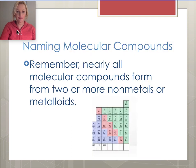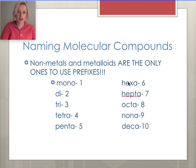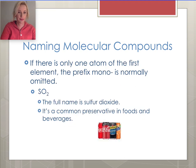When naming molecular compounds, remember that nearly all of them form from two or more nonmetals or metalloids. They are the only compounds that use prefixes. One atom is 'mono,' two is 'di,' three is 'tri,' four is 'tetra,' five is 'penta,' six is 'hexa,' seven is 'hepta,' eight is 'octa,' nine is 'nona,' and ten is 'deca.' However, if there is only one atom of the first element, you do not say 'mono.'